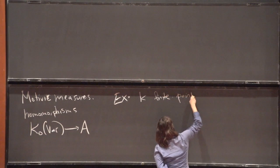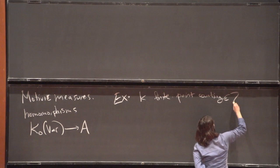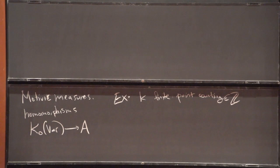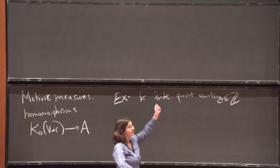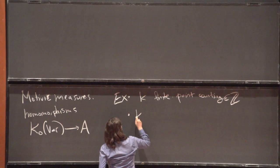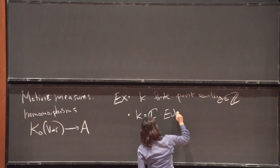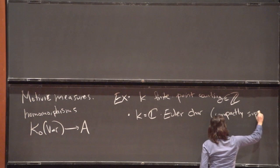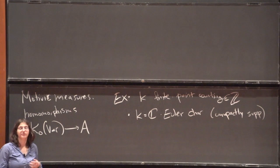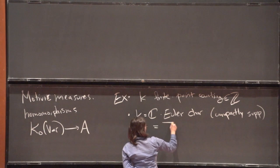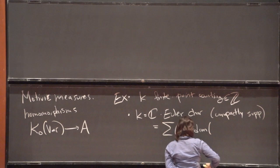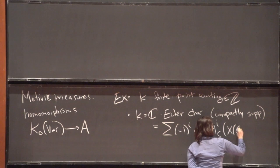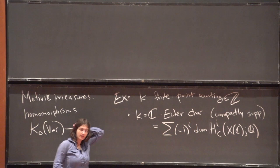Here are some examples. The first, assuming K is finite, is point counting, which lands in Z. Any point of a variety is either in the closed subvariety or the complement, so this relation is preserved, giving a valid homomorphism. Another example, assuming K is the complex numbers, is compactly supported Euler characteristic, which you can write as the alternating sum of the dimensions of the cohomology groups with compact supports — the usual topological singular cohomology with compact supports.